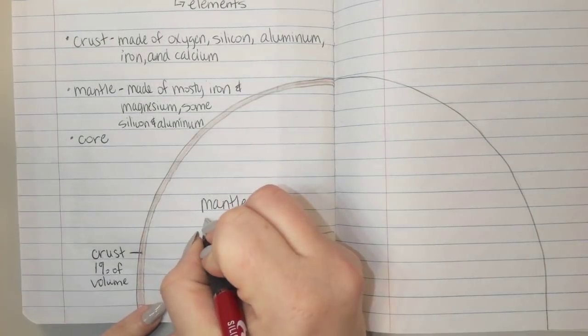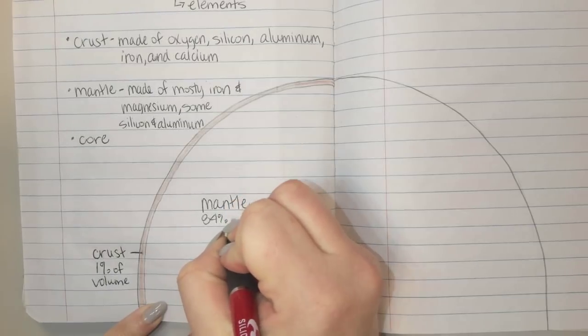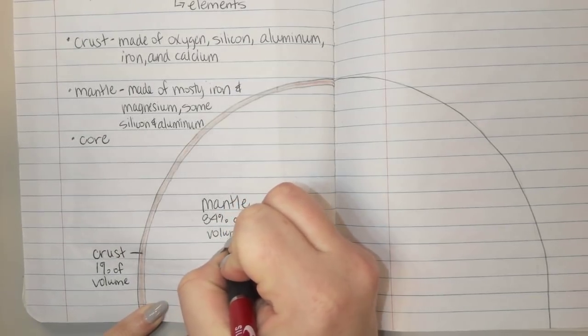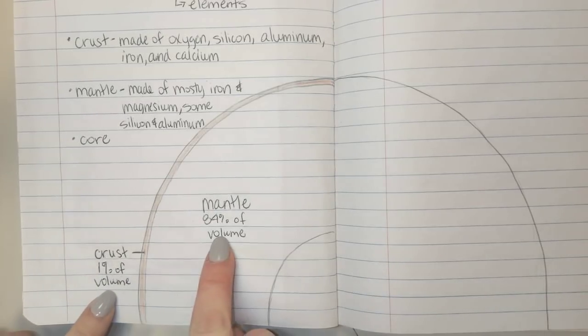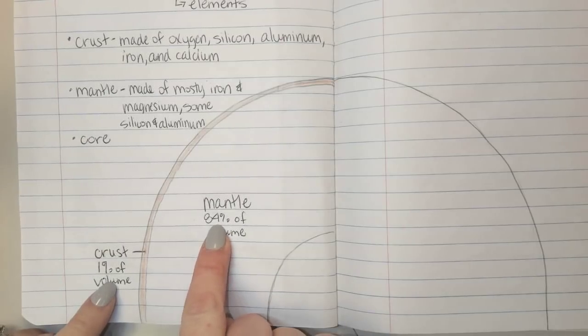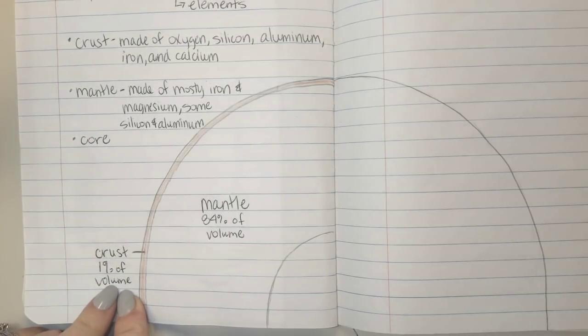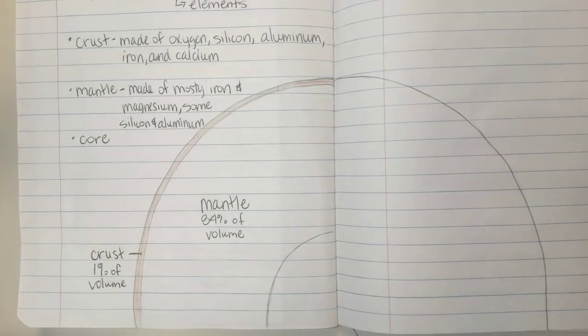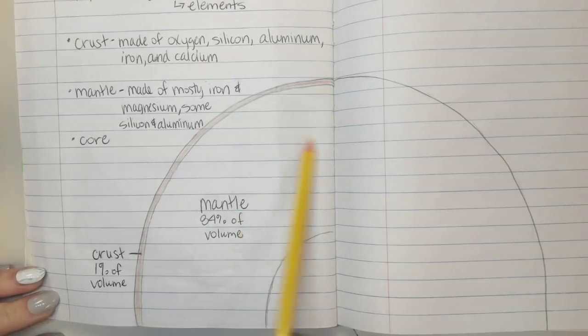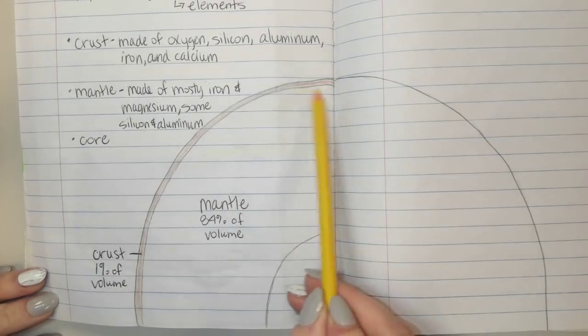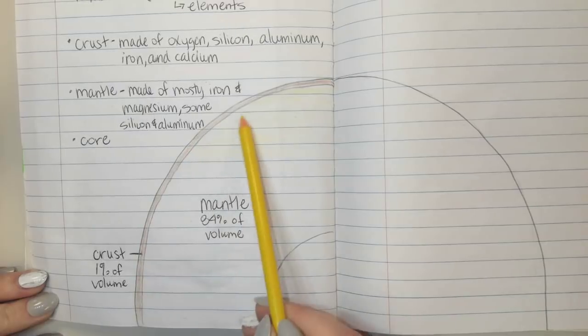I'm going to write that this is 84% of the volume. My drawing is probably not to scale, which means it's not exactly accurate when it comes to the comparison of sizes. But this will help us see that the mantle is 84 times as big as the crust. I'm going to go ahead and color that in lightly using yellow just to show the difference between the layers.